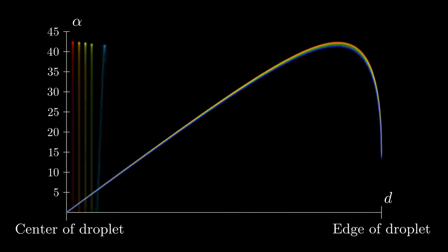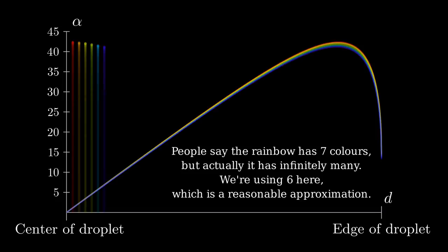Sunlight is a mixture of different colors, so what we really want to know is what these colored bars look like when they overlap. This will give us a visual indication of how much light of which color is reflected at each angle.